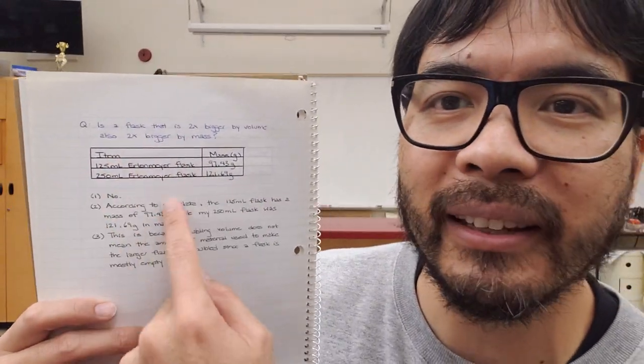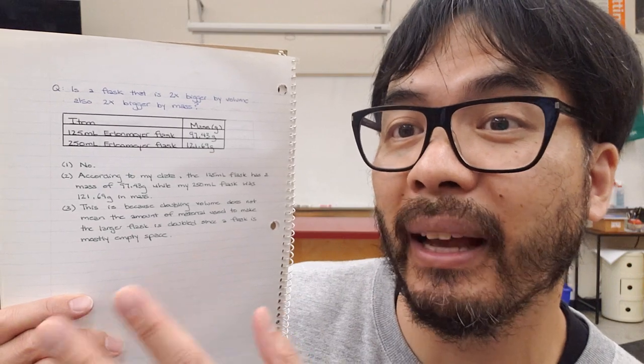I show them what would go into a strong conclusion using some sample data. I tell students that all strong conclusions have three things. Number one, they need to answer the question directly — so here, the answer is no. Next, they need to summarize the measurements and data that support the answer. Students may think this is redundant because the data table is right there, but in a real science paper the data table may be on page eight while the conclusion is on page 12 or 13. So we need to include the details of the data in our conclusion, and it's our job to analyze and sift through the important information. So I tell them to write: 'According to my data, the 125 mil flask has a mass of 97 grams while the 250 flask has a mass of 121 grams.'